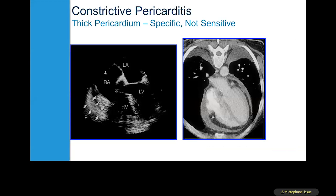Pericardial thickening can be appreciated using echocardiography. Using transesophageal echocardiography, you can visualize a thickened pericardium over the right ventricle, and there is very good correlation between transesophageal echocardiographic and CT-measured pericardial thickness.